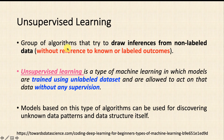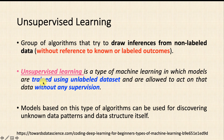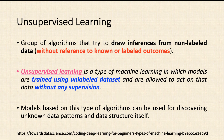The second type is unsupervised learning — a group of algorithms that draw inferences from non-labeled data. Here the main thing is we don't have a reference to known outcomes. Unsupervised learning is a type of machine learning in which models are trained using unlabeled datasets and are allowed to act on that data without any supervision. A good analogy is learning by yourself without any teacher, using different resources.